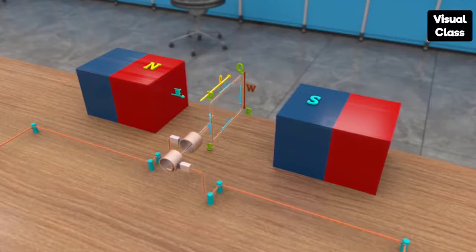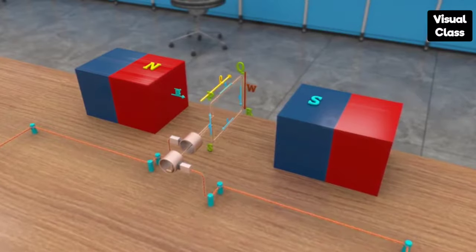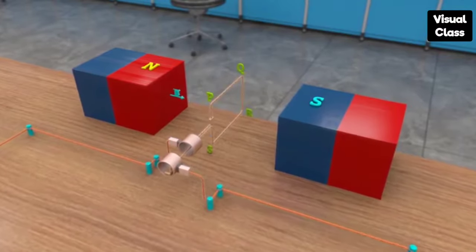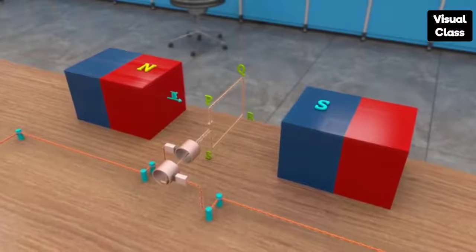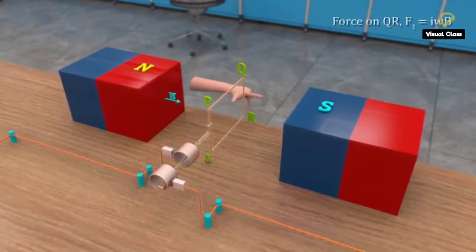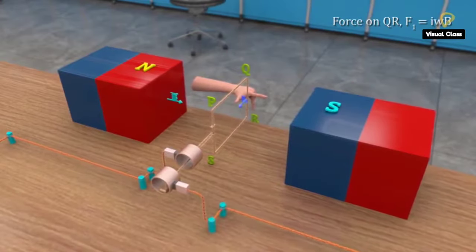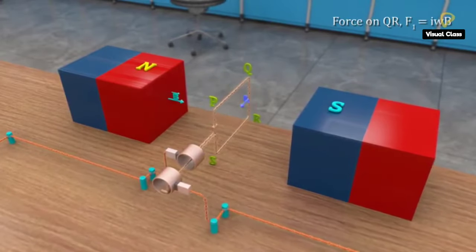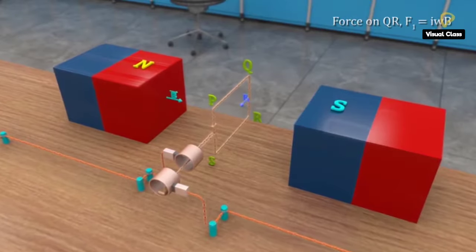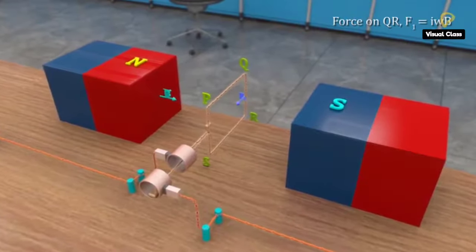Current I flows in the coil in the direction PQRS. On applying Fleming's left-hand rule on side QR, the magnetic force F1 equal to IWB turns out to be perpendicular to QR and to the magnetic field.